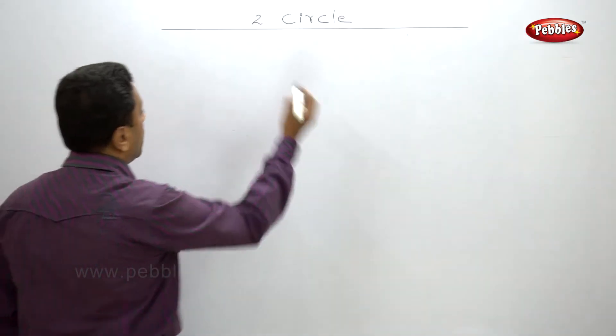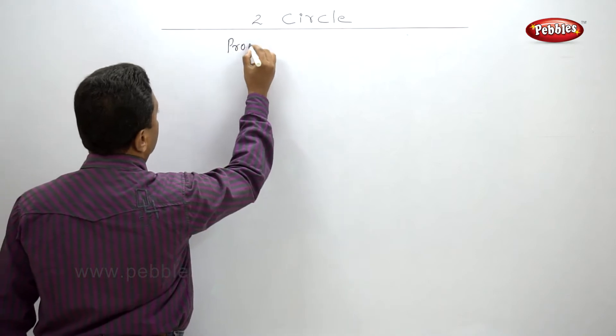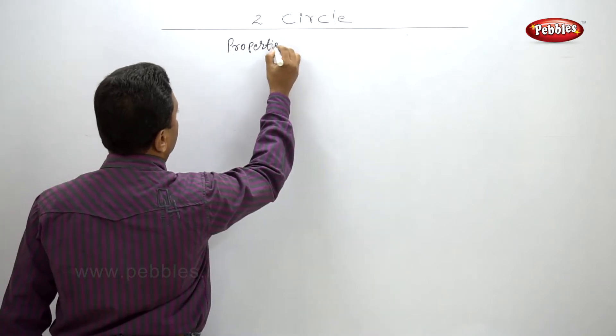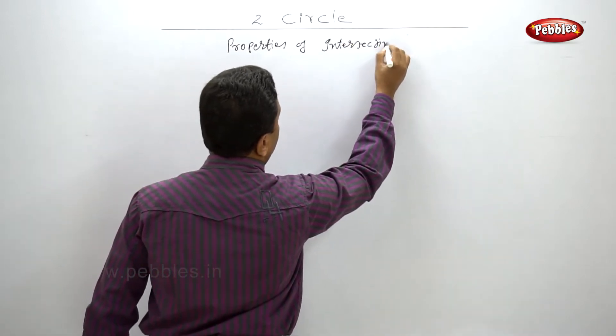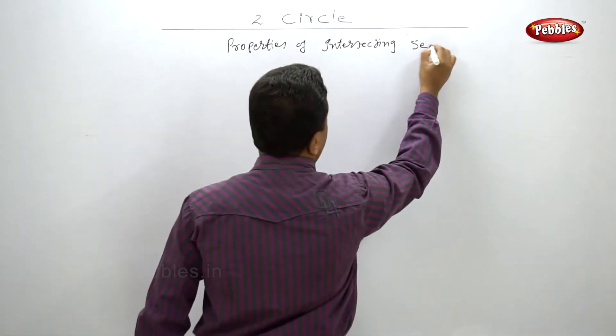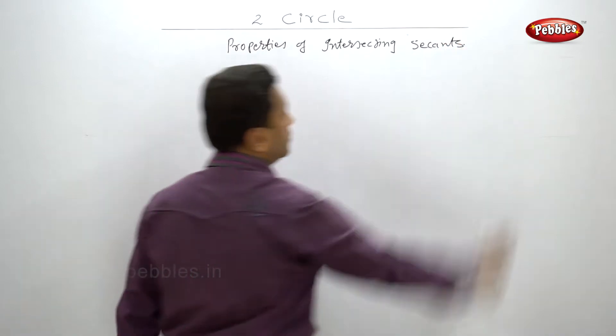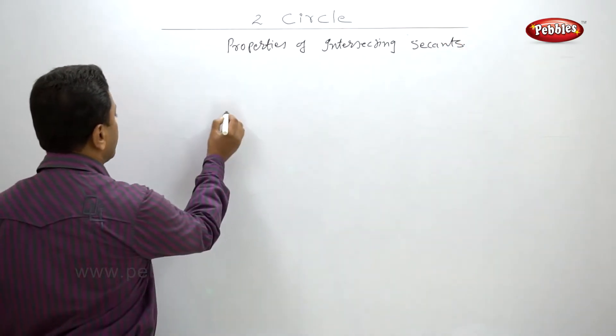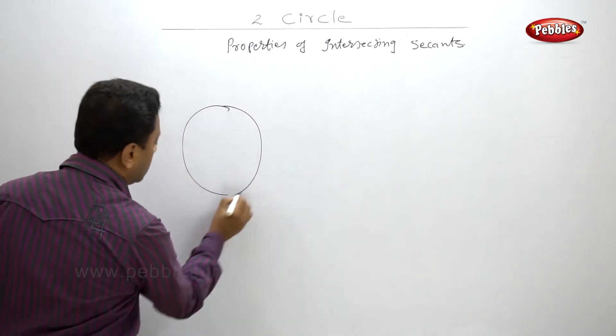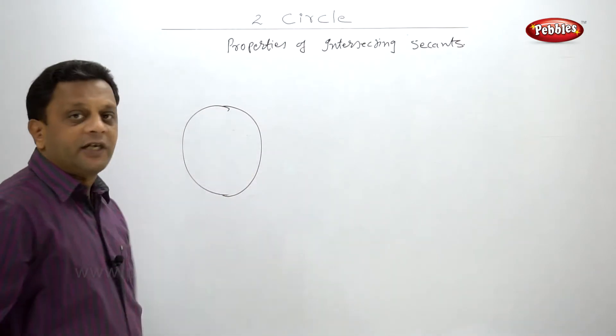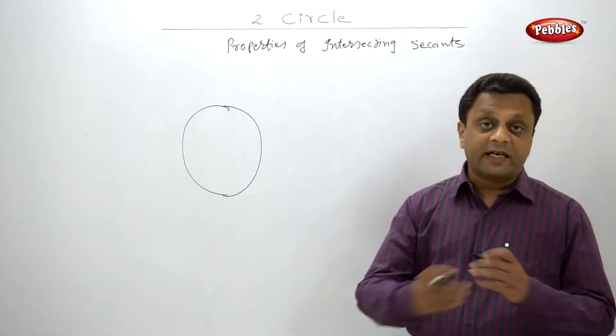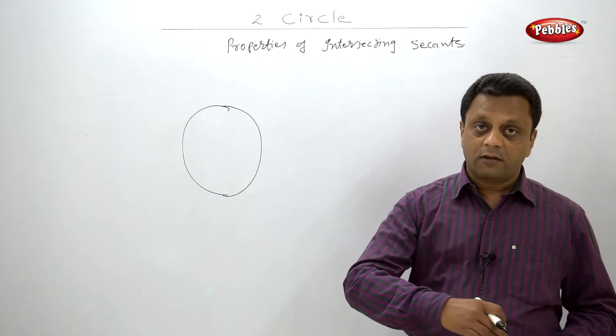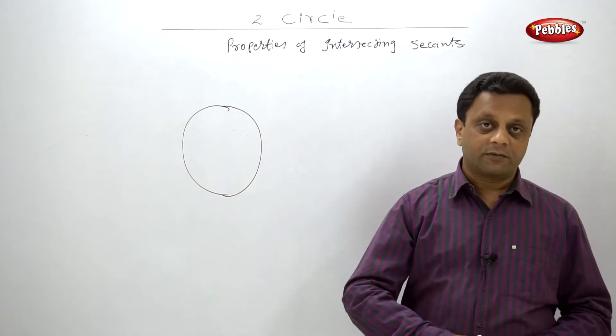Properties of intersecting secants - it's very simple. If there is one circle and two intersecting secants are there, these intersecting secants can intersect inside the circle or outside the circle. First, let's see the condition where they intersect inside the circle.